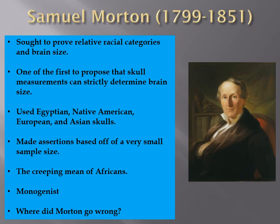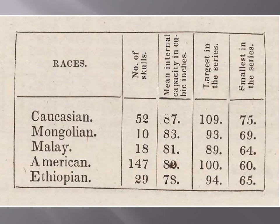Morton was an ardent monogenist. Where did he go wrong? He fudged his numbers. Looking at the number of skulls used, the larger degree were Native American skulls and there were only a few Ethiopian skulls — the African skulls. His original studies were based off of such a small sample size that statistically it can't make any valid statement about humans as a whole.